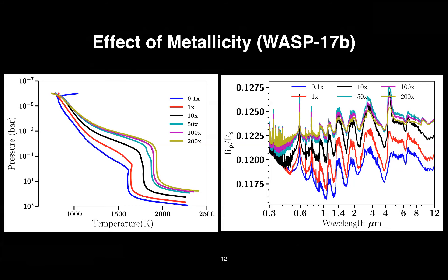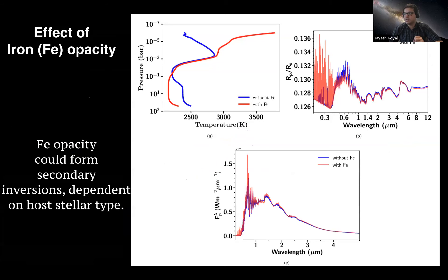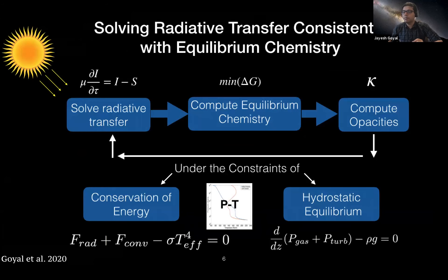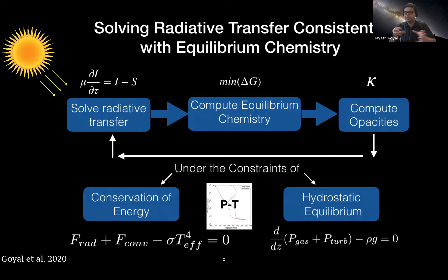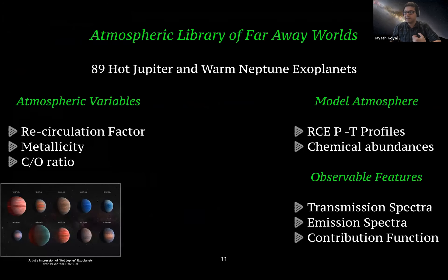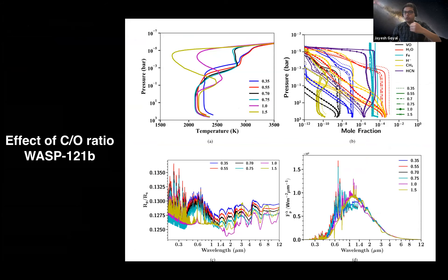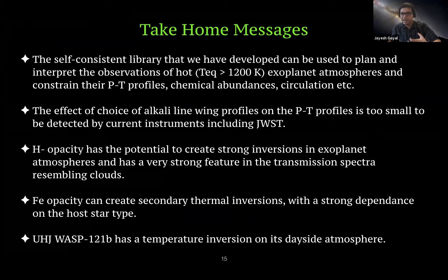The main limiting factors are: we assumed equilibrium chemistry — for ultra-hot Jupiters this may not be a big issue, but we haven't included non-equilibrium effects like vertical mixing and photochemistry. That's the next step. We're also currently restricted to temperatures above 1200 K because at lower temperatures the chemistry becomes more complex, especially condensates and clouds. Developing a physically representative cloud model is one of the important next steps.